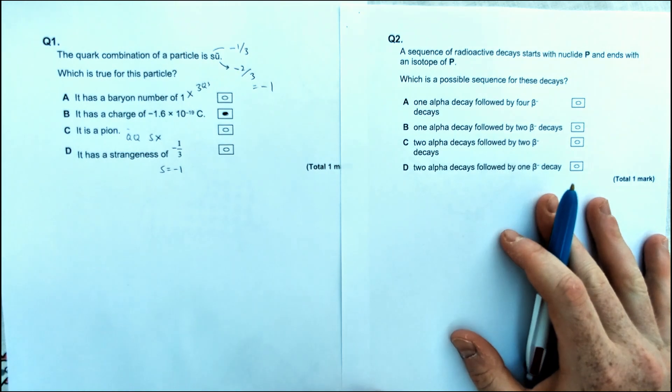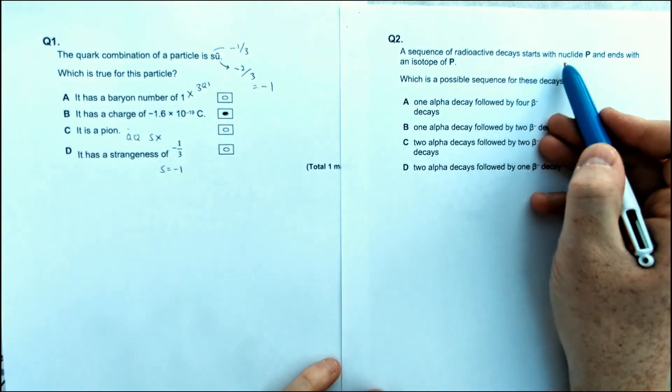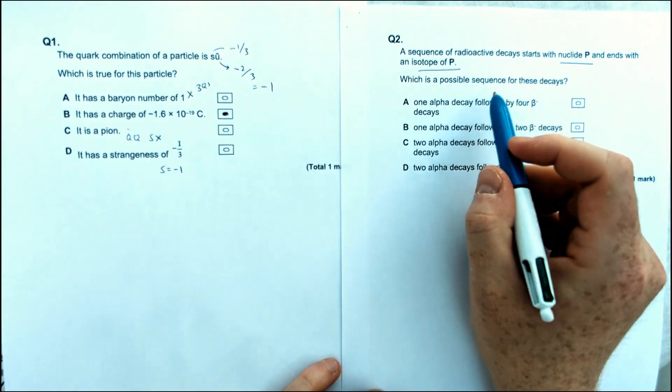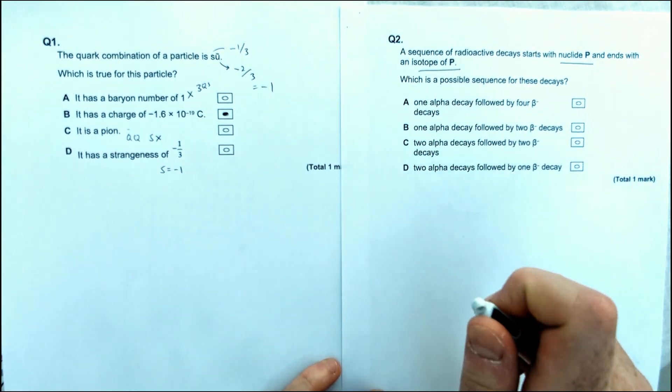Next one over here, we've got a series of decays. So it says it starts with a certain nucleus, P, and ends with a certain isotope. So isotope meaning it's got a different number of protons in it.